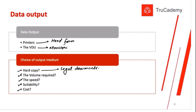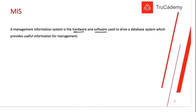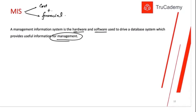The definition of MIS: a Management Information System is the hardware and software used to drive a database system which provides useful information to management. MIS most often collects cost transactions but can also collect financial transactions. The hardware and software together collect data, process it, produce output, and that output is used by managers for planning, controlling, and decision making.